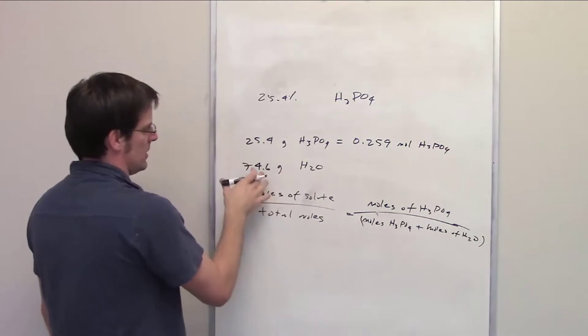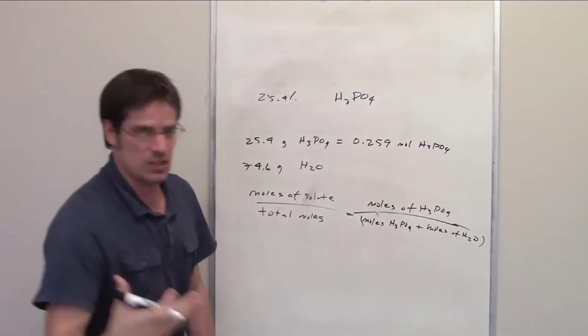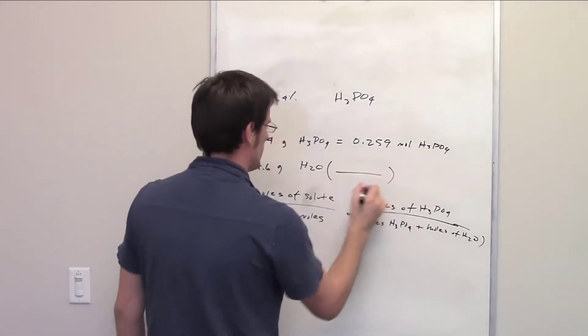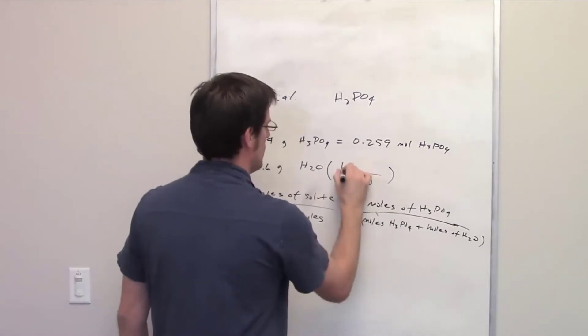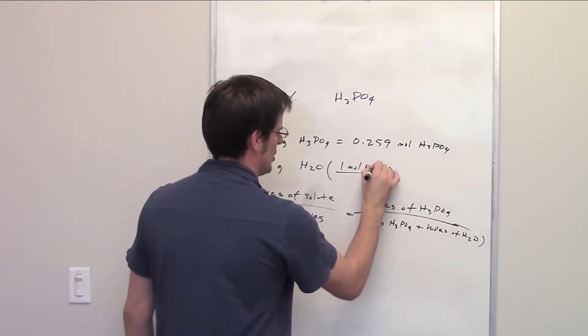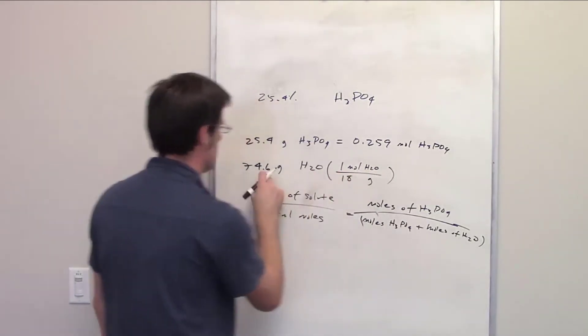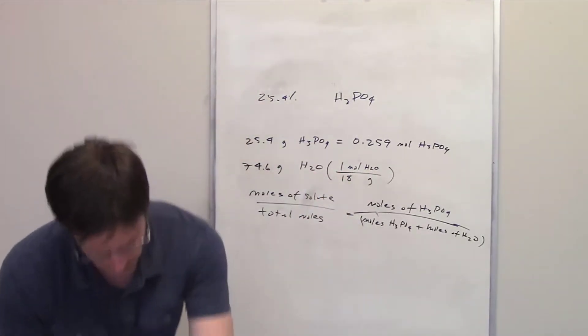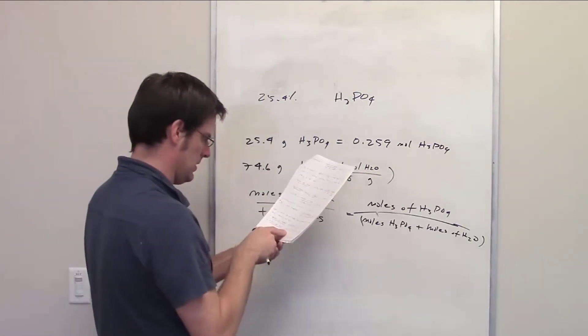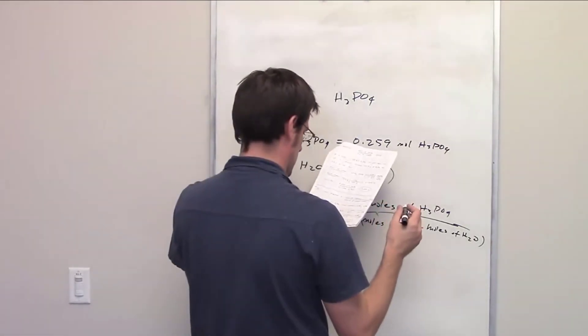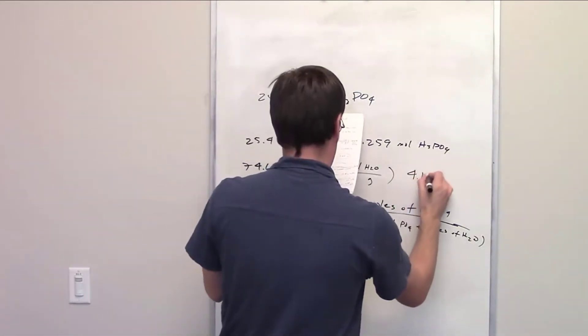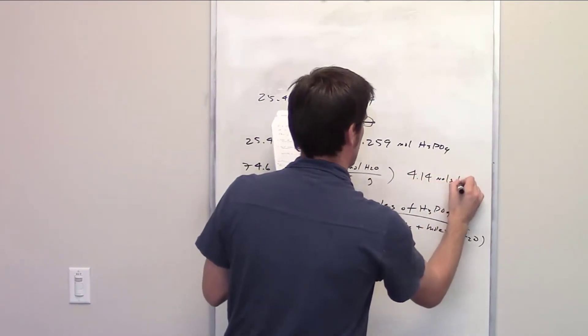How many moles of water are 74.6 grams of water? Well, I use the molecular weight here. I've got 1 mole of water is equal to—hydrogen weighs 1, oxygen weighs 16—that's 18 grams. 74.6 divided by 18 comes out to be 4.14 moles of water.